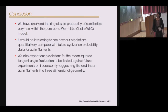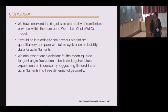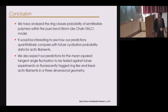To conclude, we have analyzed the ring closure probability of semi-flexible polymers within the pure bend worm-like chain model. It would be interesting to see how our predictions quantitatively compare with future cyclization probability data for actin filaments. We also expect our predictions for the mean squared tangent angle fluctuation to be tested against future experiments on fluorescently tagged ring-like and linear actin filaments in a three-dimensional geometry. Thank you.